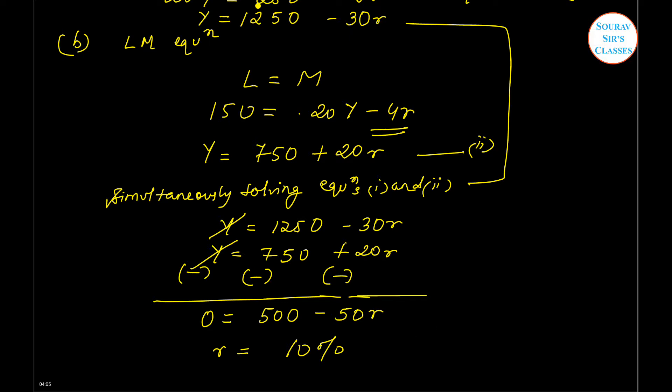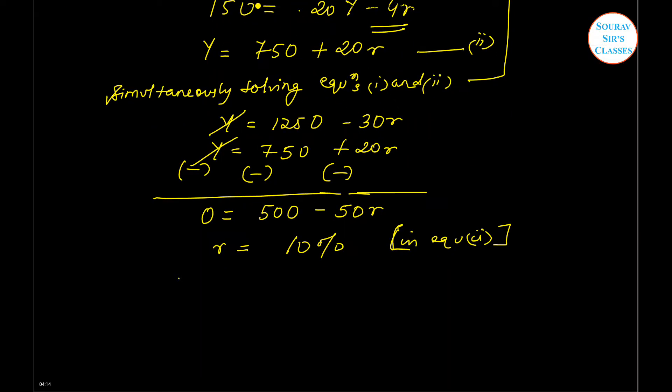And if I substitute this in equation two or any of the equations, I will get something like this: it will be 750 plus 20 times 10, which is 200, so Y equals 950.